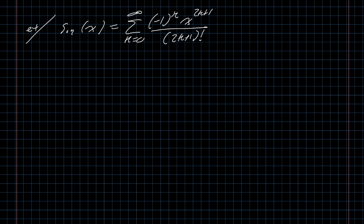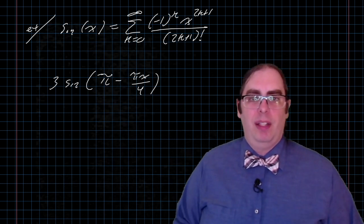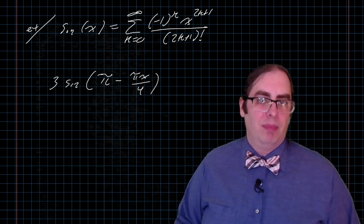Let's end with something kind of on the same vein. I have that sine of x is the sum, k goes from 0 to infinity, of negative 1 to the k, times x to the 2k plus 1, all over 2k plus 1 factorial. And I want you to come up with a power series representation for 3 times the sine of pi minus pi x over 4. All right, take a couple of minutes, see what you can come up with there, and I'll see you in the next video.